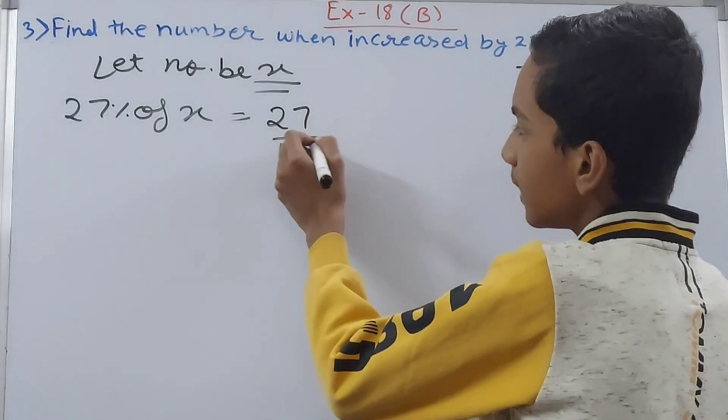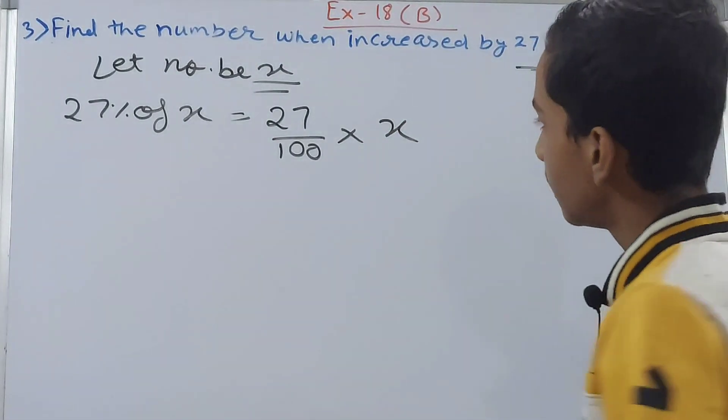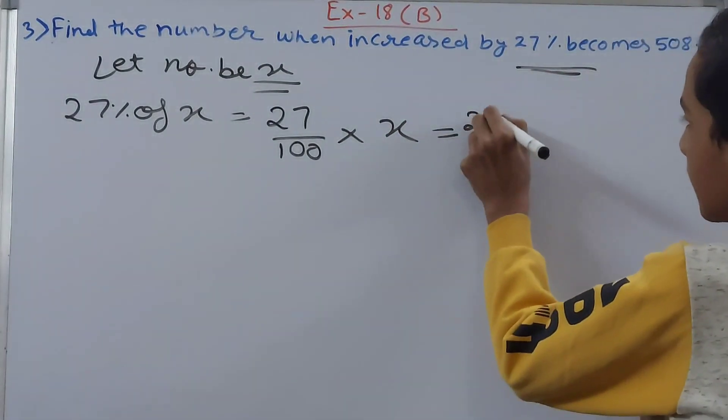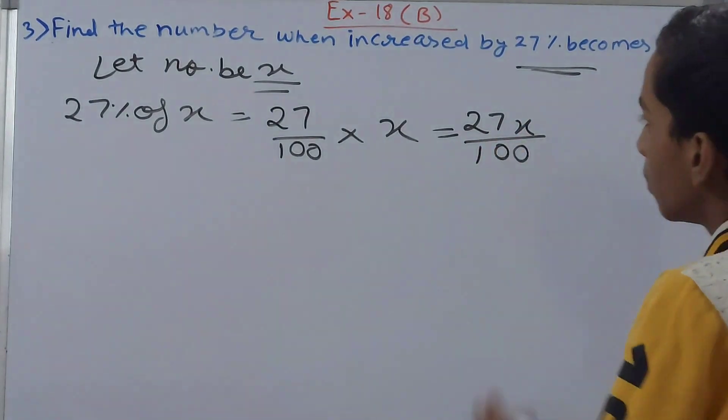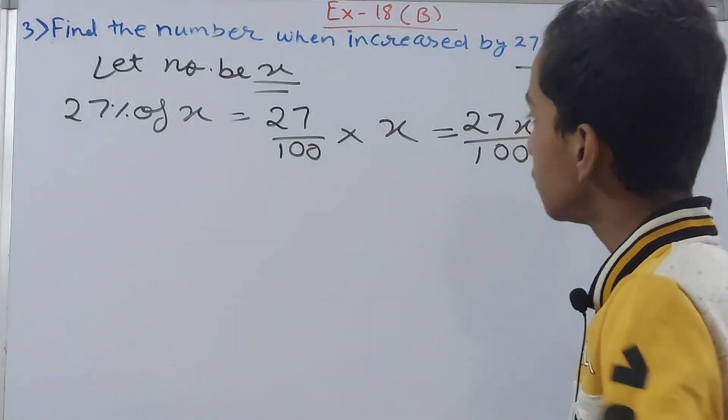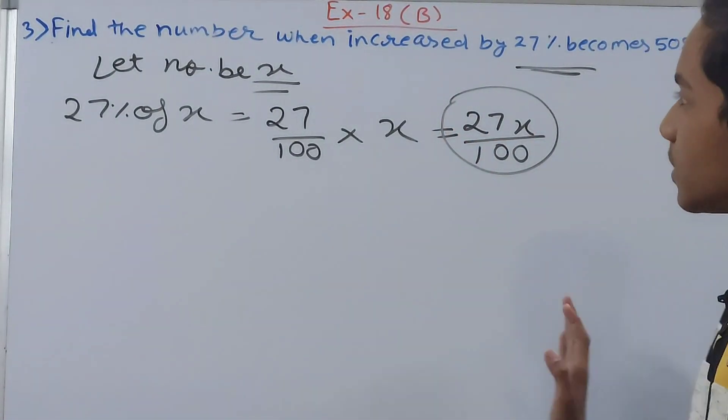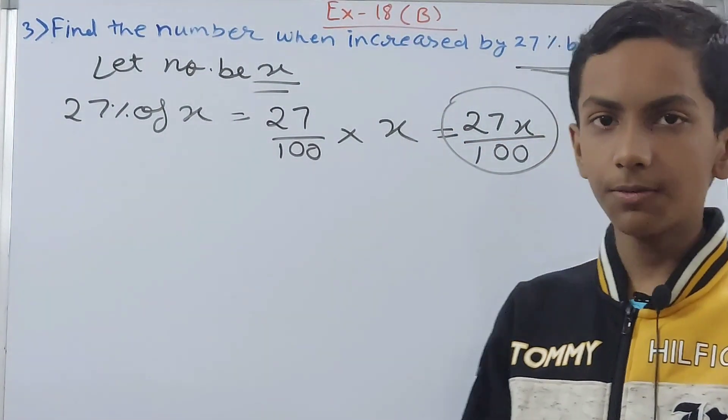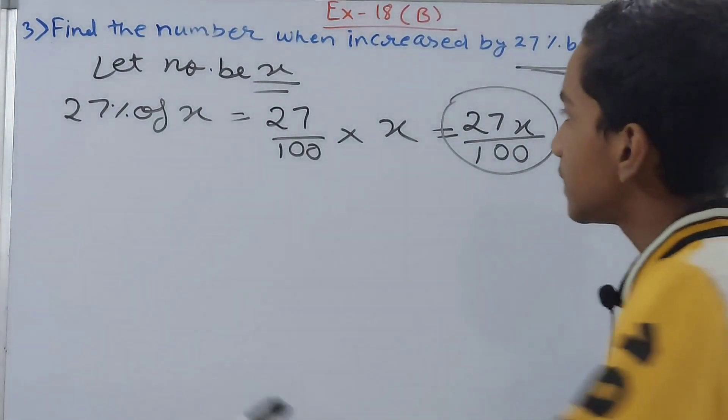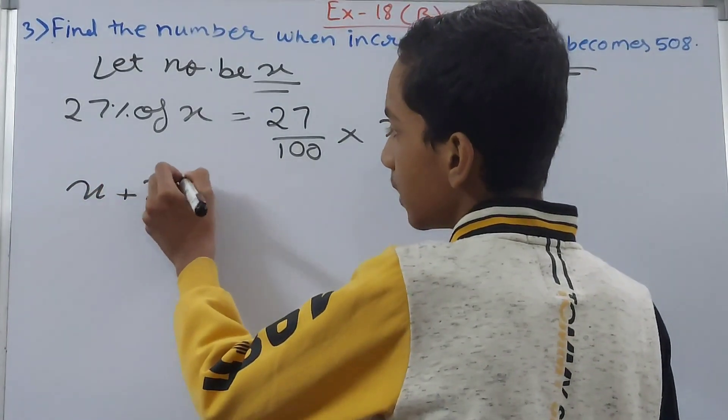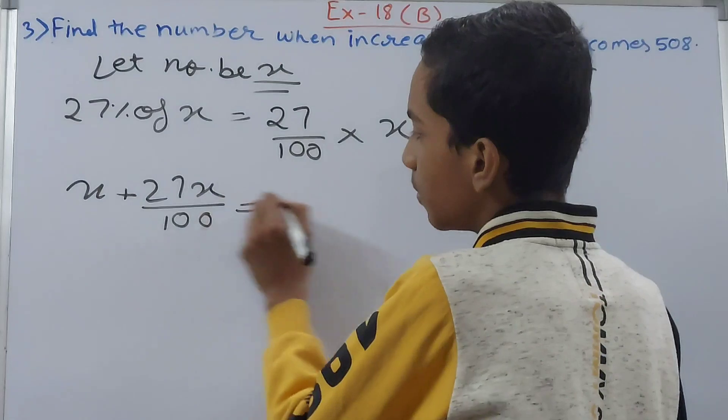So you can write this as 27% becomes 27 upon 100 of x, and then x. So this will be what? 27x upon 100. Now you see here that this much was increased in our number x.